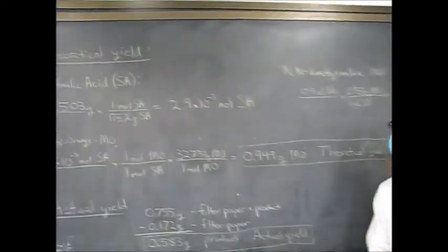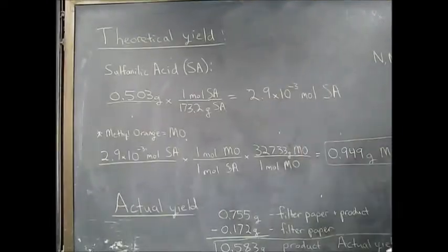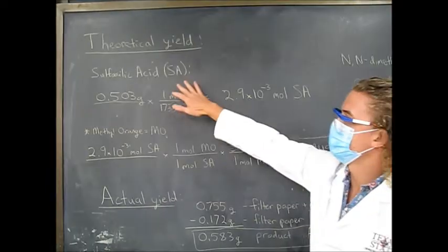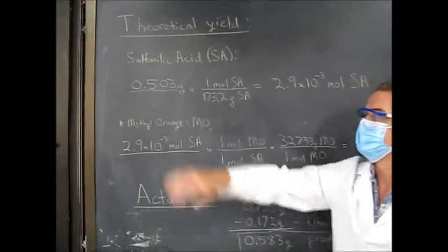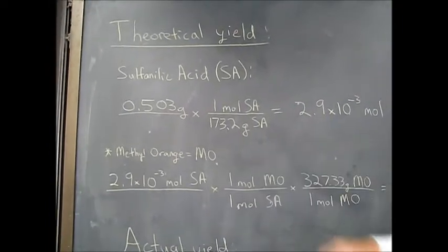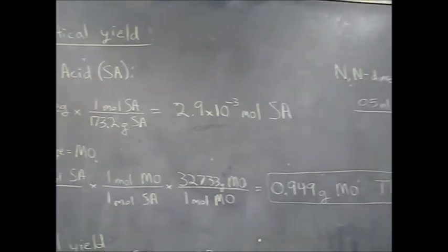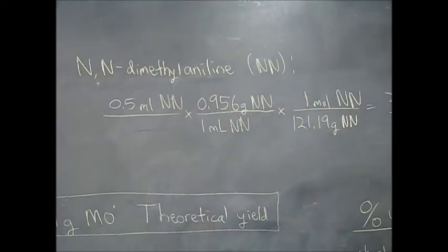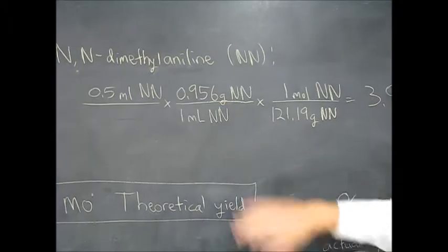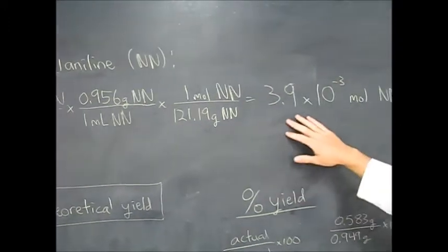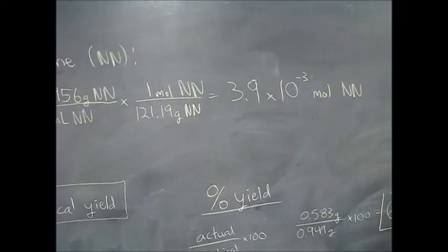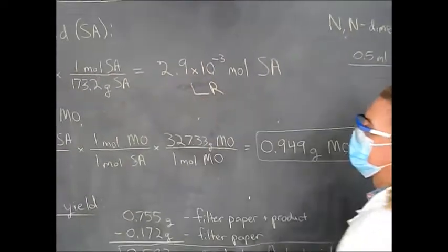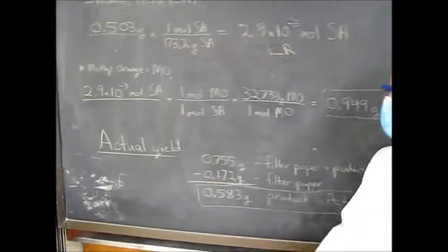Alright, so now time for the calculations portion of the methyl orange lab. So first we need to calculate our percent yield. So to do that, we need to first find how many moles of each reactant we use. So we'll start with sulfanilic acid, which we're going to abbreviate as SA. We use 0.503 grams. Divided by the molecular weight, you get 2.9 times 10 to the negative 3 moles of it. And then our other reactant was N,N-dimethyl aniline. So this was a liquid. So we have 0.5 milliliters of it. So we first have to multiply by the density to get it into grams. And then we can divide by the molecular weight. And then we'll get 3.9 times 10 to the minus 3 moles. So that means that this is the excess reagent. This is our limiting reagent.